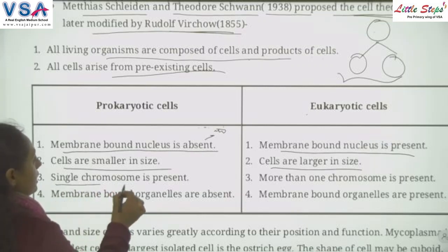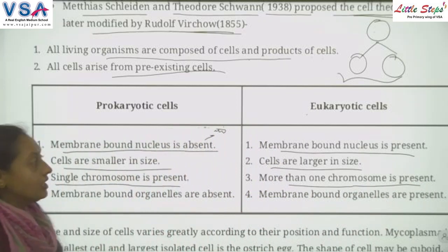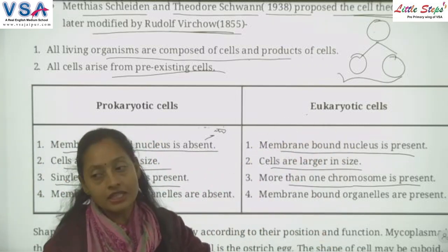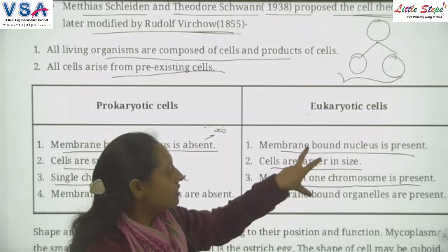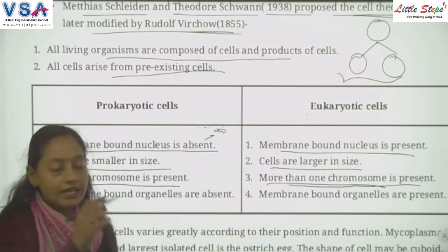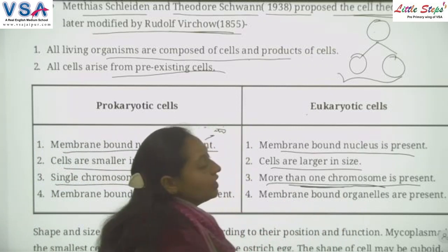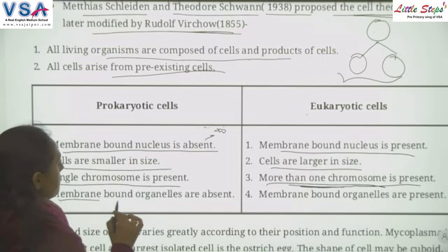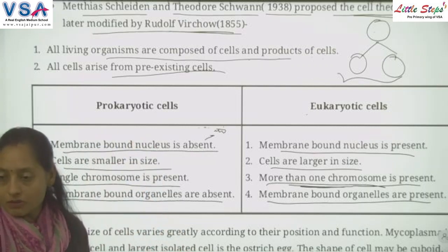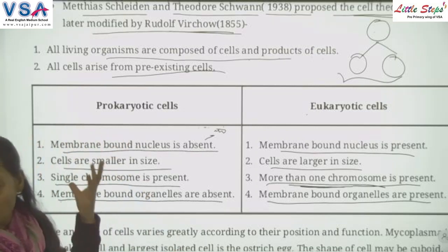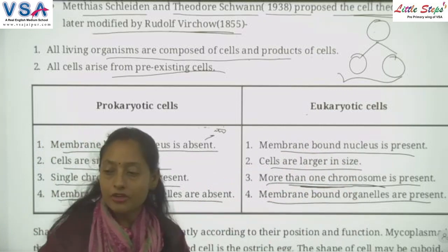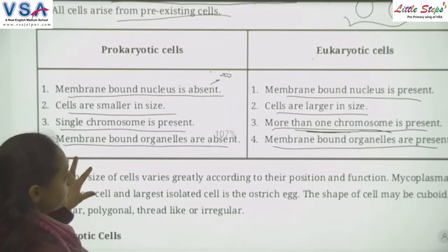In prokaryotic cells, only a single chromosome is present, while in eukaryotic cells more than one chromosome is present within a nucleus surrounded by nuclear membrane, forming a chromatin structure. Membrane-bound organelles such as Golgi body and mitochondria are absent in prokaryotic cells but present in eukaryotic cells.